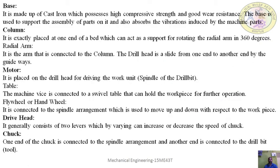The base is made of cast iron, which has high compressive strength and good wear resistance. It supports the assembly of all parts and absorbs vibrations during operation. The base is heavier in construction and has good wear and vibration resistance because it must handle heavy and larger workpieces continuously. It must be strong enough to bear the weight of the workpiece and withstand constant use.